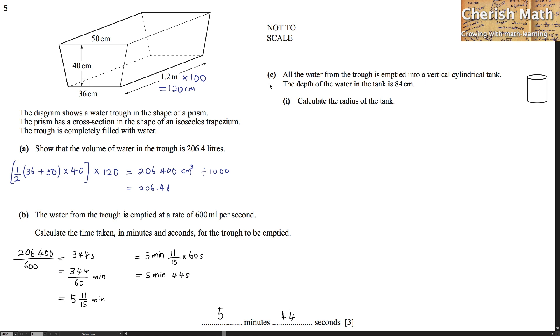Question 5, part C. All the water from the trough is emptied into a vertical cylindrical tank. The depth of the water in the tank is 84 cm. Now, calculate the radius of the tank.